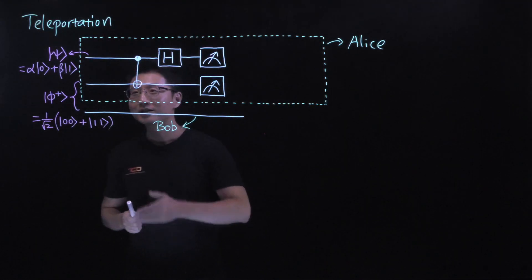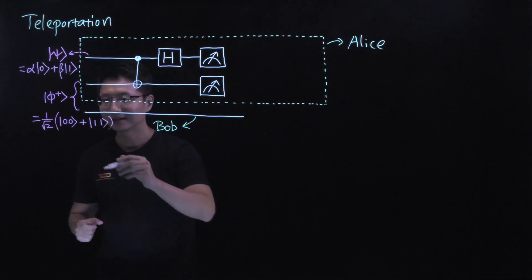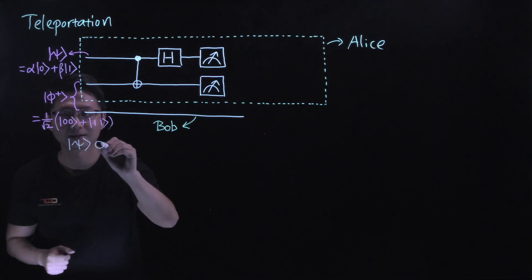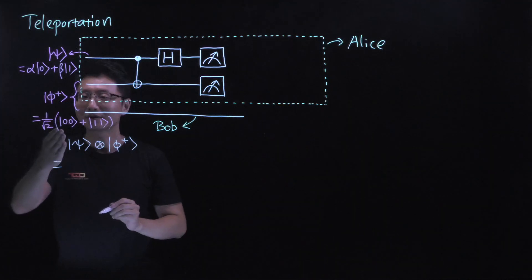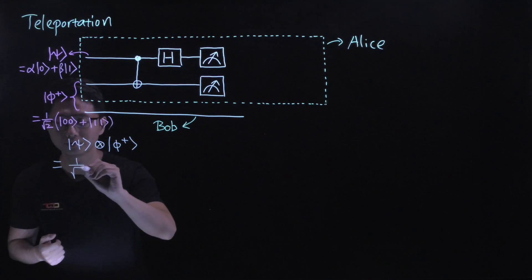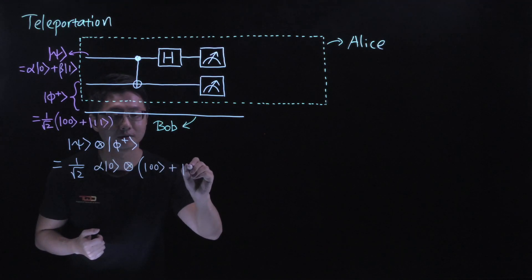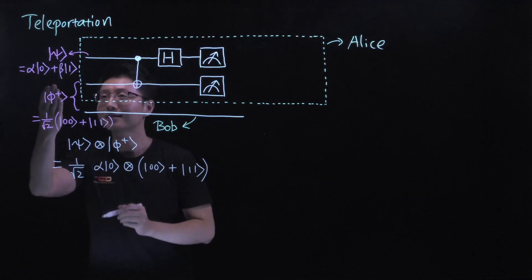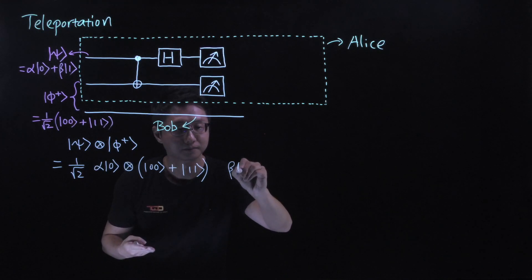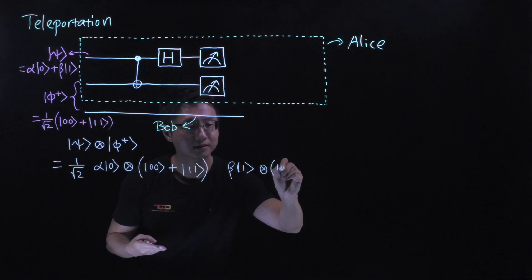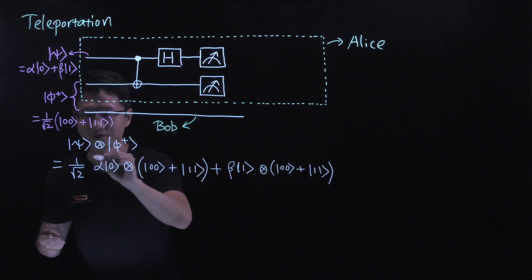Let's now go through the protocol. Initially, this three-qubit state is Psi tensor with the Bell state, so we start with |Ψ⟩ ⊗ |Φ+⟩. Writing it out, there is the term alpha |0⟩ tensor with the Bell state, giving 1 over root 2 times alpha |0⟩ ⊗ (|00⟩ + |11⟩), and the term with beta |1⟩ tensor with the Bell state, giving beta |1⟩ ⊗ (|00⟩ + |11⟩), both with the same coefficient 1 over root 2.